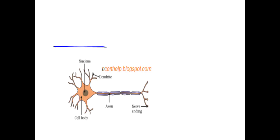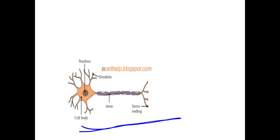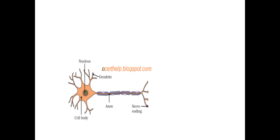The nerve cells are known as neurons — you would have studied this from your earlier classes. Looking at the parts of a neuron, this part is known as the cell body. The cell body has a nucleus and cytoplasm. You can also see small processes called dendrites. The major function of dendrites is to collect information from the adjacent cells.